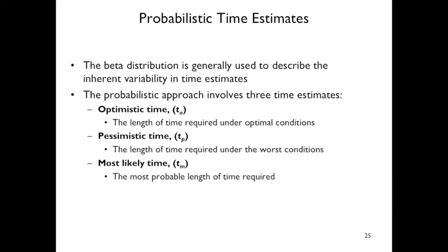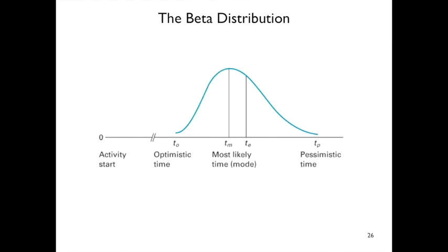Probabilistic time estimates use a beta distribution to describe inherent variability. There are three approaches: optimistic time (under optimal conditions), pessimistic time (under worst conditions), and most likely time (the most probable duration). For example, worst case is four days, most likely is three days, and most optimistic is one day. There's often a beta distribution between optimistic and pessimistic, and you might use a slightly pessimistic estimate — the T expected (Te) — for your planning.